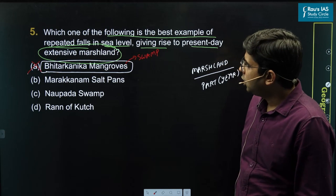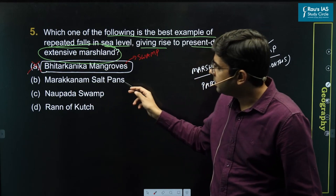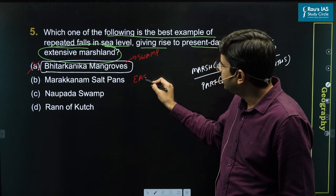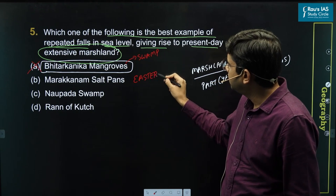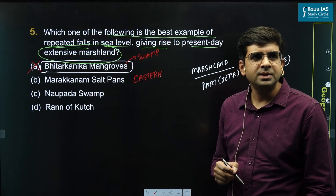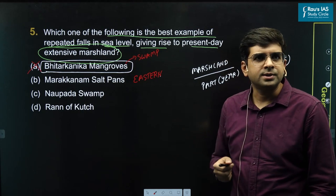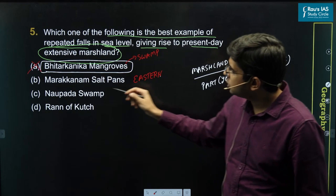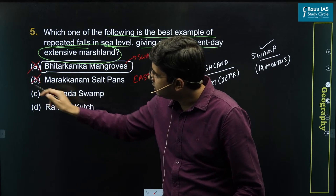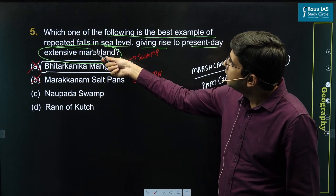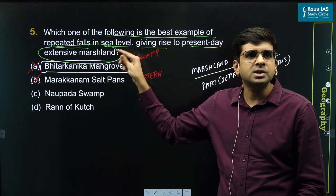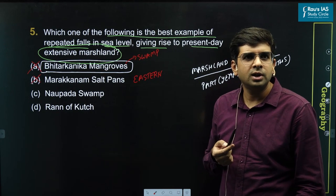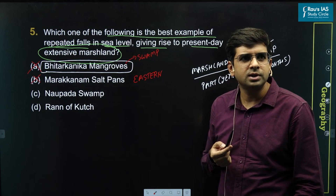Option B is Marakanam salt pans, present along the eastern coastline of India. These have been developed by human beings — they are man-made salt pans, not natural ones. Consequently, this option can also be eliminated because the question is asking about repeated falls in sea level forming the marshland, not human involvement.